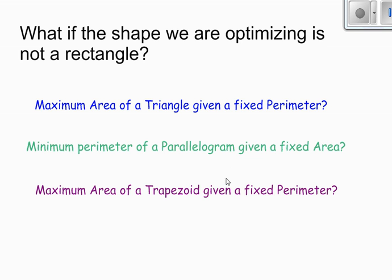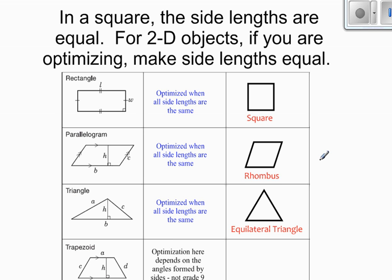So the question is, what if we're not optimizing a rectangle? So what if we have a triangle and we're trying to maximize area given a certain perimeter? Or a parallelogram and we're trying to minimize perimeter given a fixed area and so on? Well, here's what the rule is. In a square, side lengths are equal. And that's kind of the rule you can extend to other objects. For two-dimensional objects, if you are optimizing, make side lengths equal.